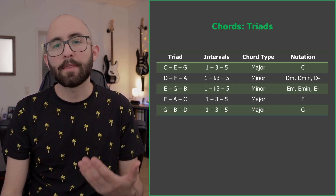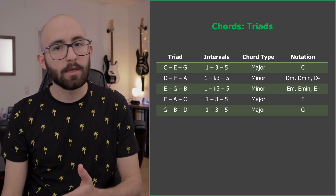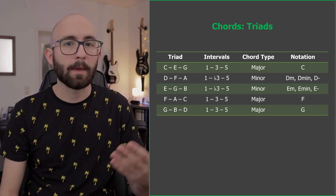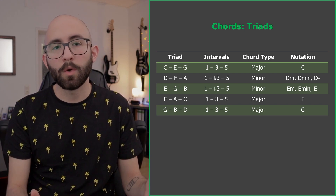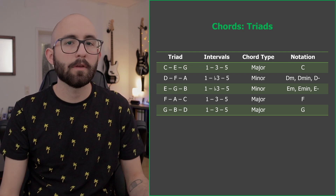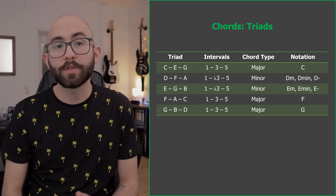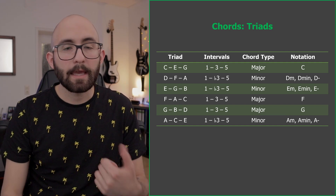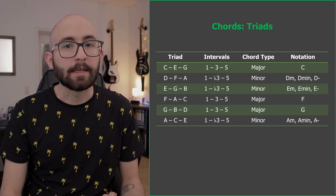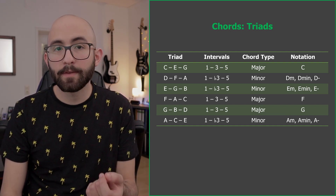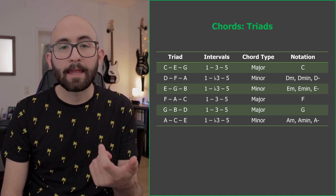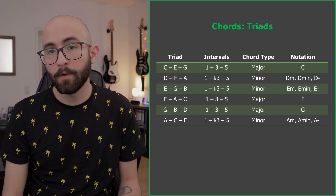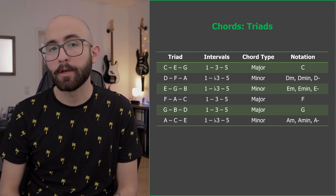Starting on G, we get G, B, and D. Again, a major third between the first and the second note, hence a G major chord. When we start on A, we get A, C, and E. Between A and C we have a minor third, therefore we get an A minor chord.